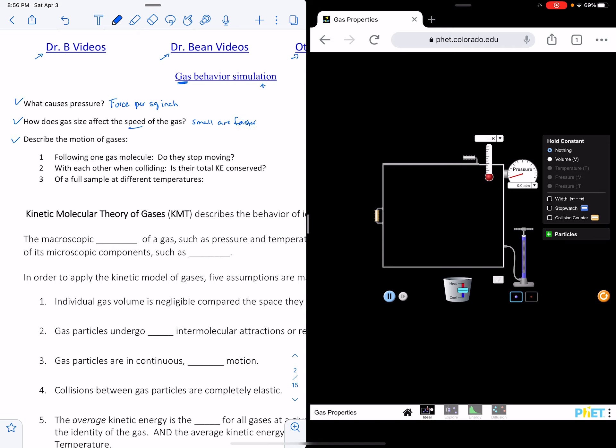That's speed. Okay, let's talk about the motion. We're going to follow one gas molecule. First we're going to figure out if they stop moving, we're going to look about when they collide, is their energy conserved, and then what happens at different temperatures. So first, you're going to want to track maybe this top purple. Track it. Notice it's going in a straight line and then it hits off the side. It keeps going. Oh, it got hit by something else.